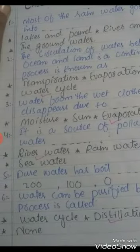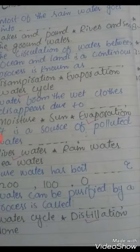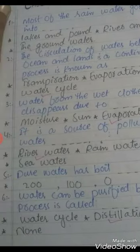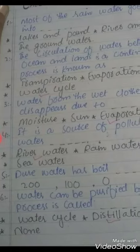Number 6: Water can be purified by a process called dash. Options: water cycle, distillation, none of these. Correct option is distillation.